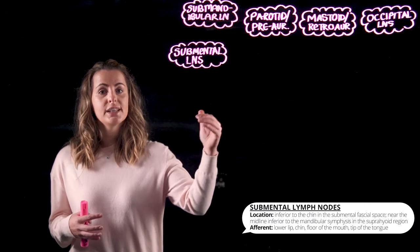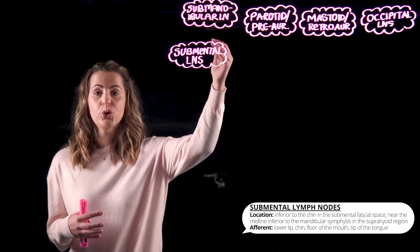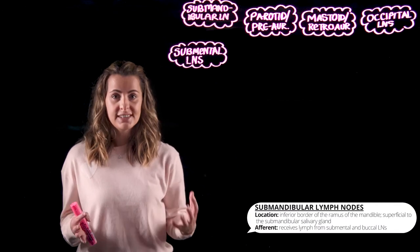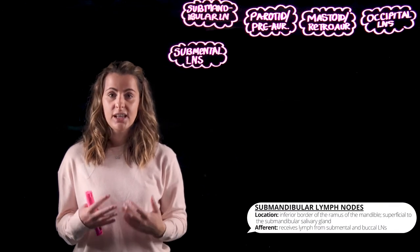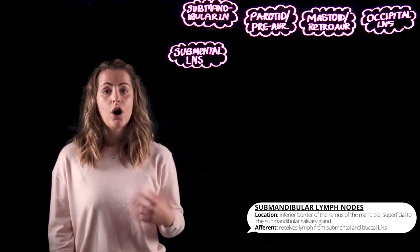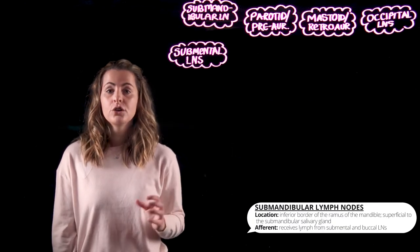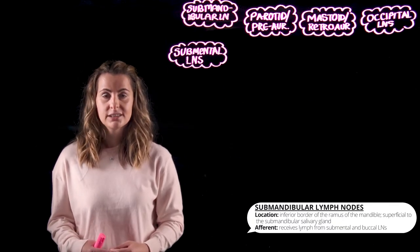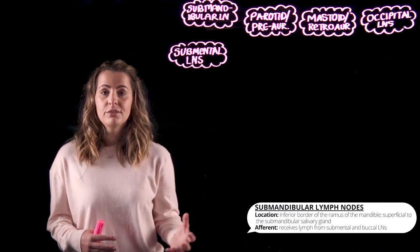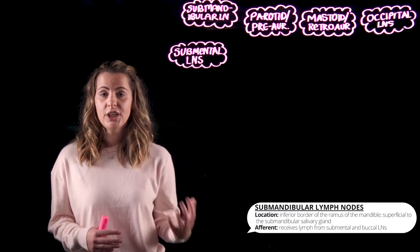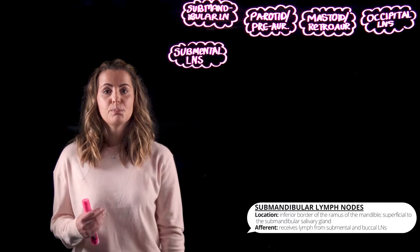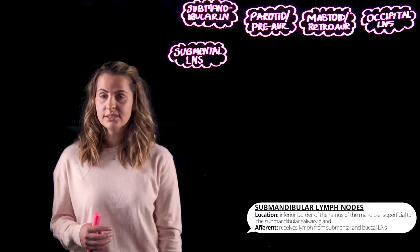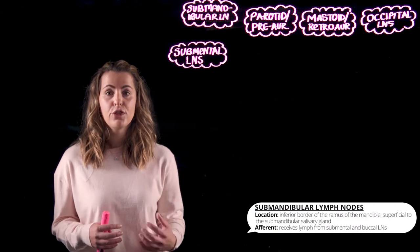The submental lymph nodes drain to the submandibular nodes, of which there are three to six, found at the inferior border of the ramus of the mandible, superficial to the submandibular salivary gland. The submandibular lymph nodes receive lymph from the cheeks, the upper lips, the body of the tongue, and all of the teeth except for the lower incisors and the third molars.